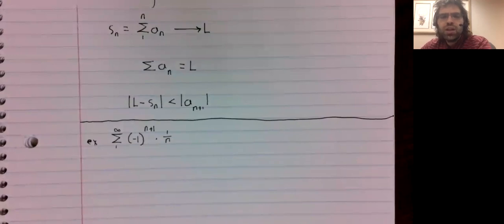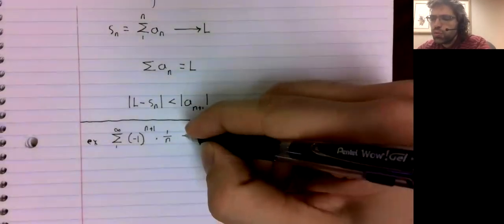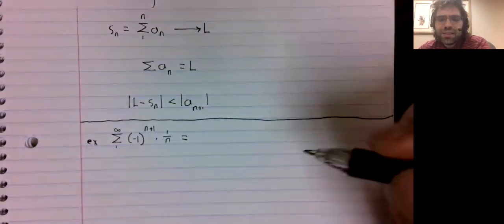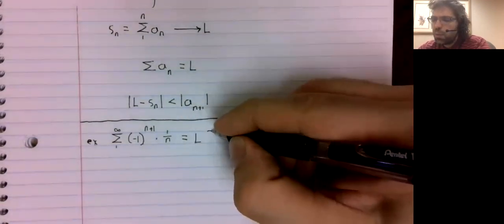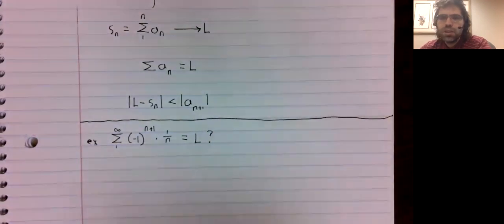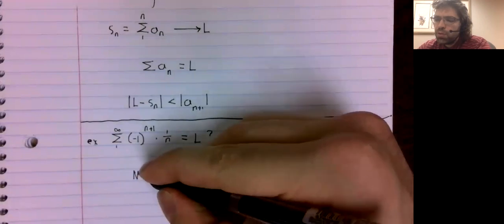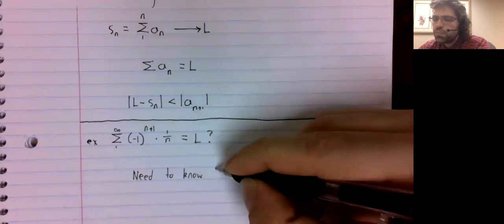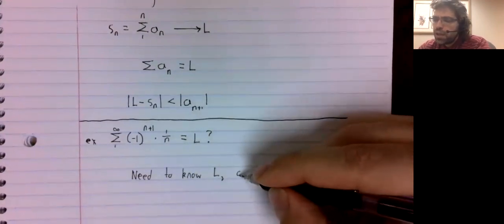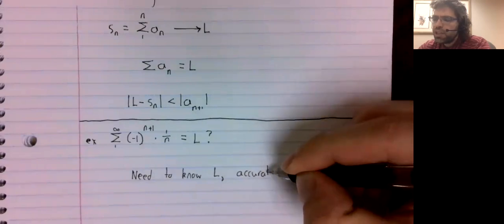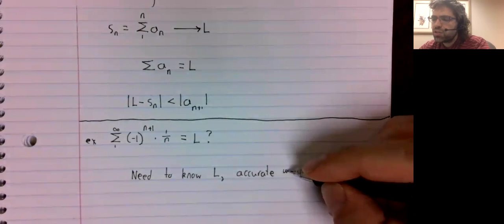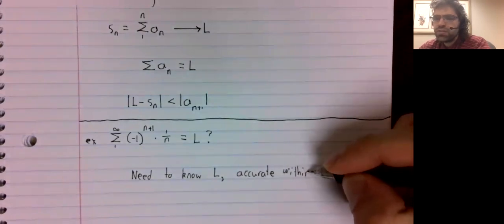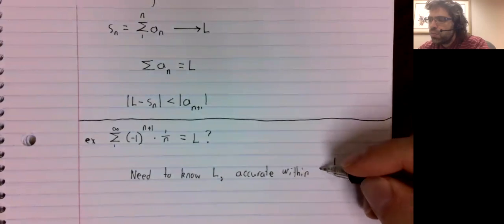But what does it converge to? What is this sum? Suppose we want to numerically approximate it. Suppose we need to know L and we need to be pretty accurate. We need our accuracy to be within one billionth.